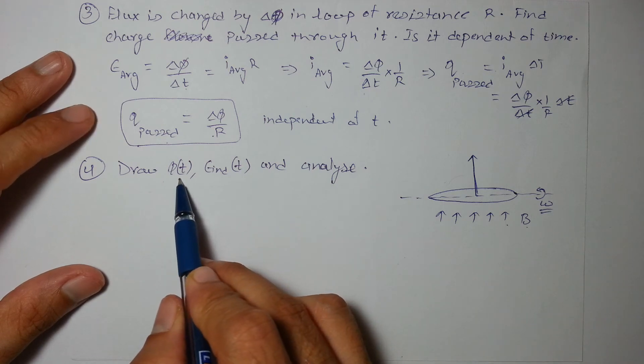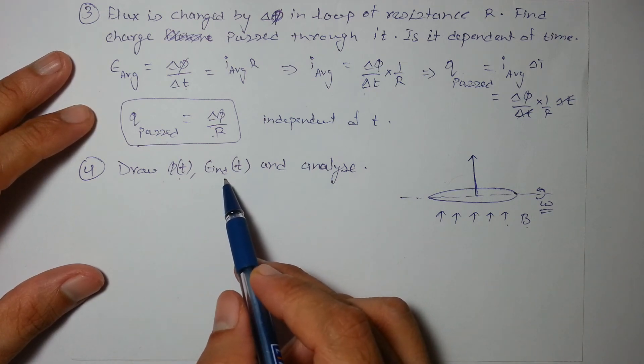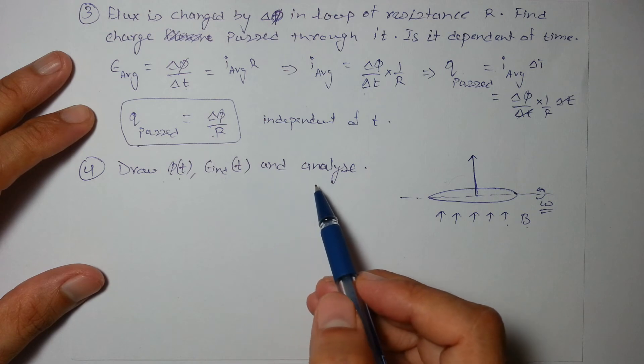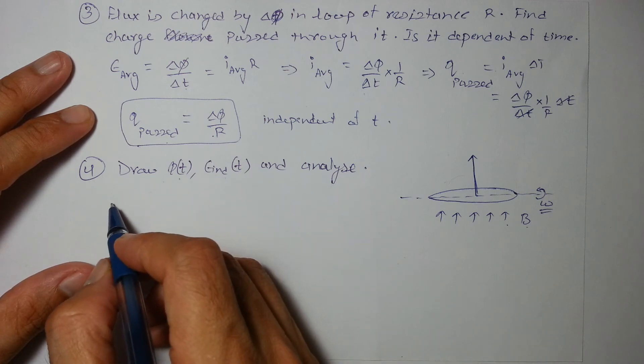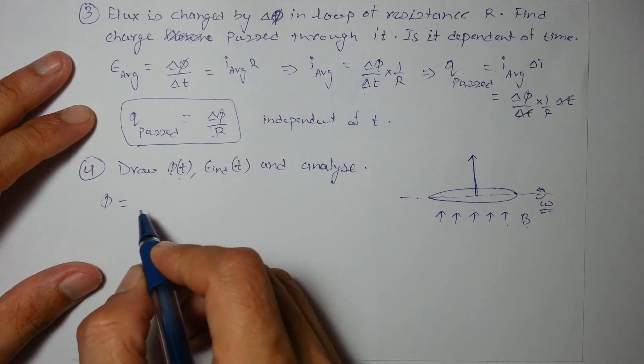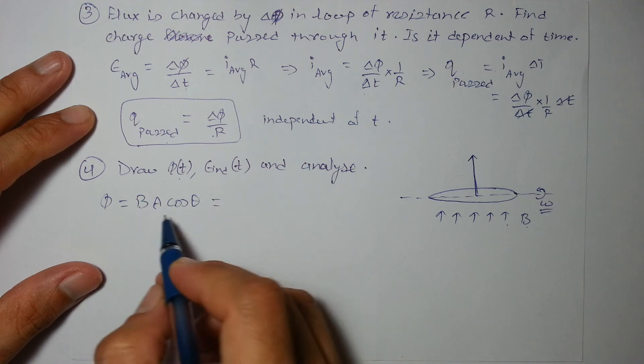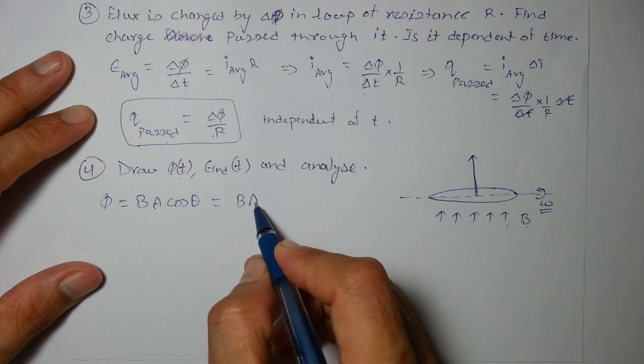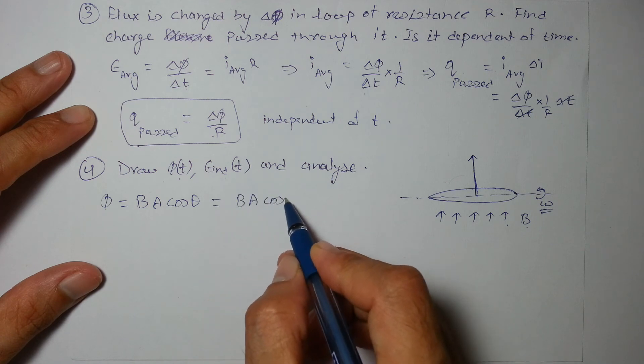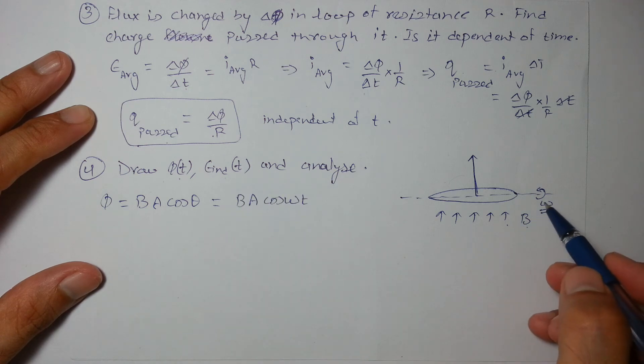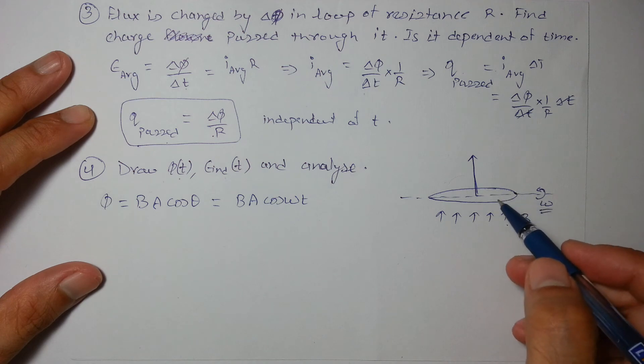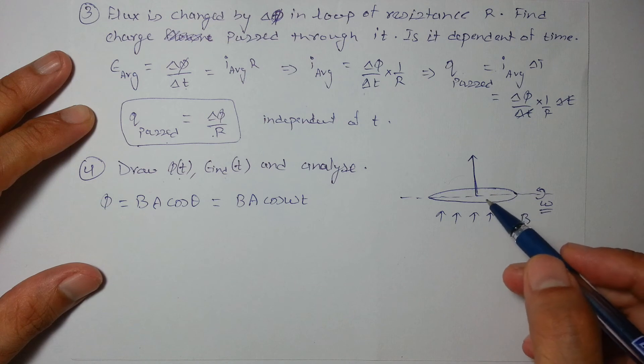We have to find phi as a function of t and EMF induced as a function of t. So let's start with phi. Phi is BA cos of angle between them. So the angle covered in time t will be omega t. Omega into t is the angle covered in time t or the angle by which the circular loop is rotated.